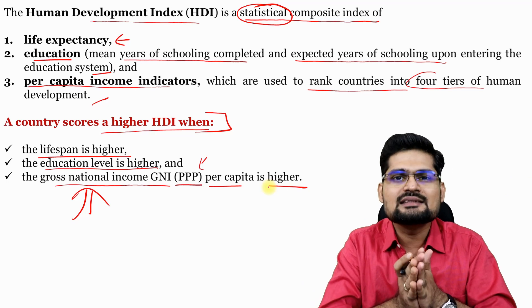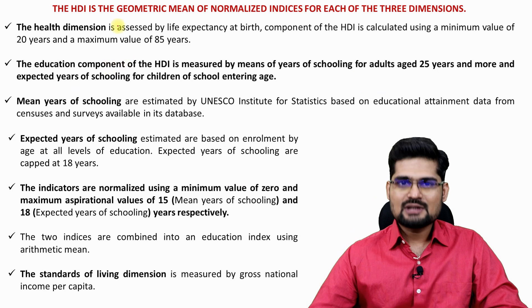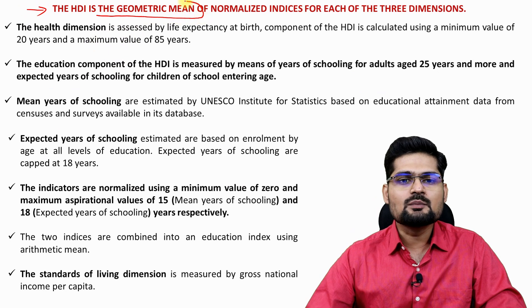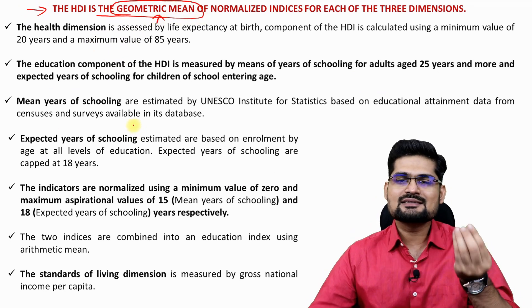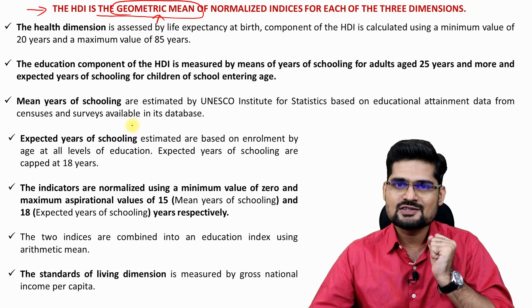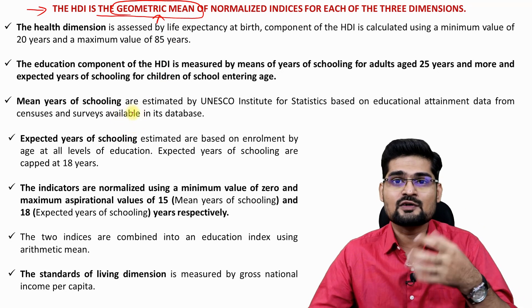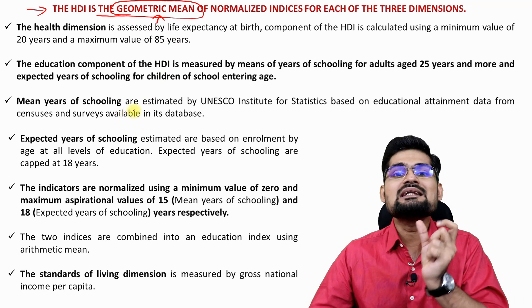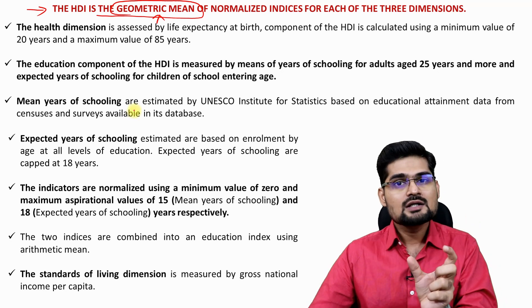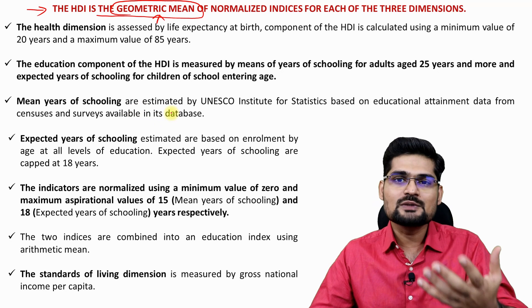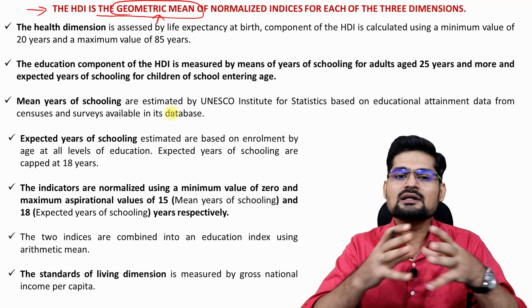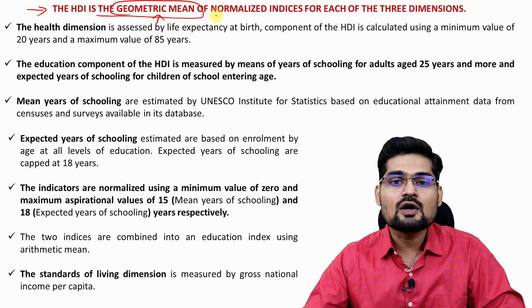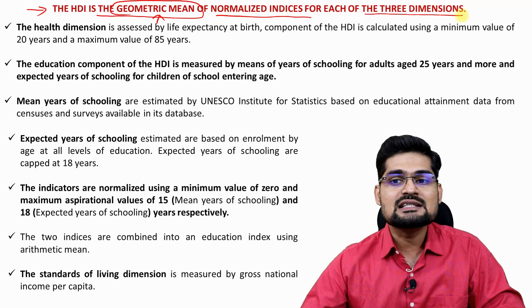HDI is calculated through the statistical technique of geometric mean — not arithmetic mean. Geometric mean is the basis of calculation here for normalized indices for each of the three dimensions. The three factors are life expectancy, education, and per capita income indicators.